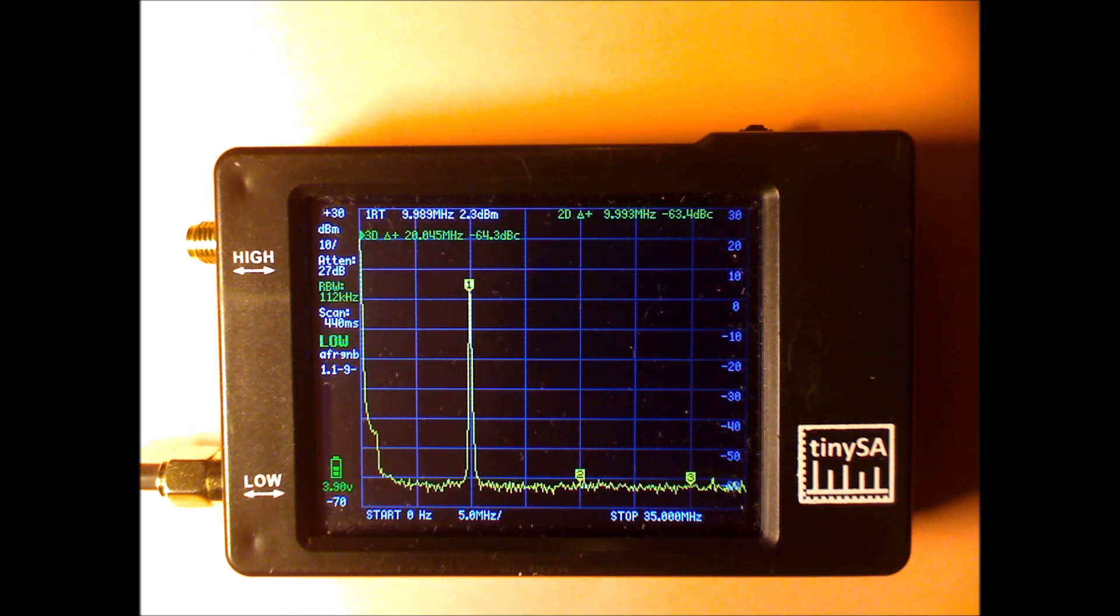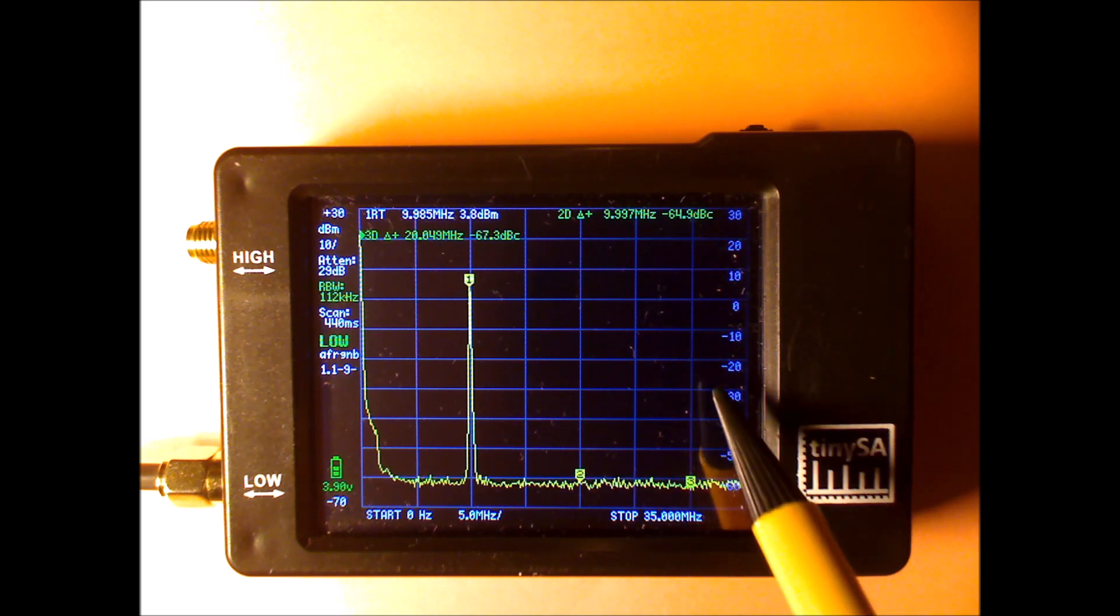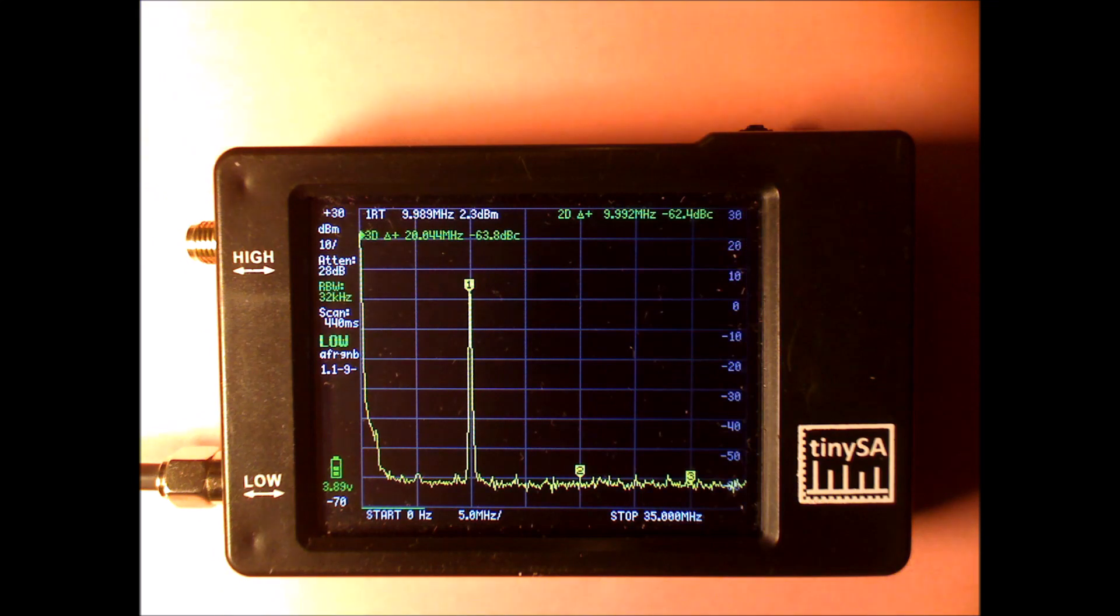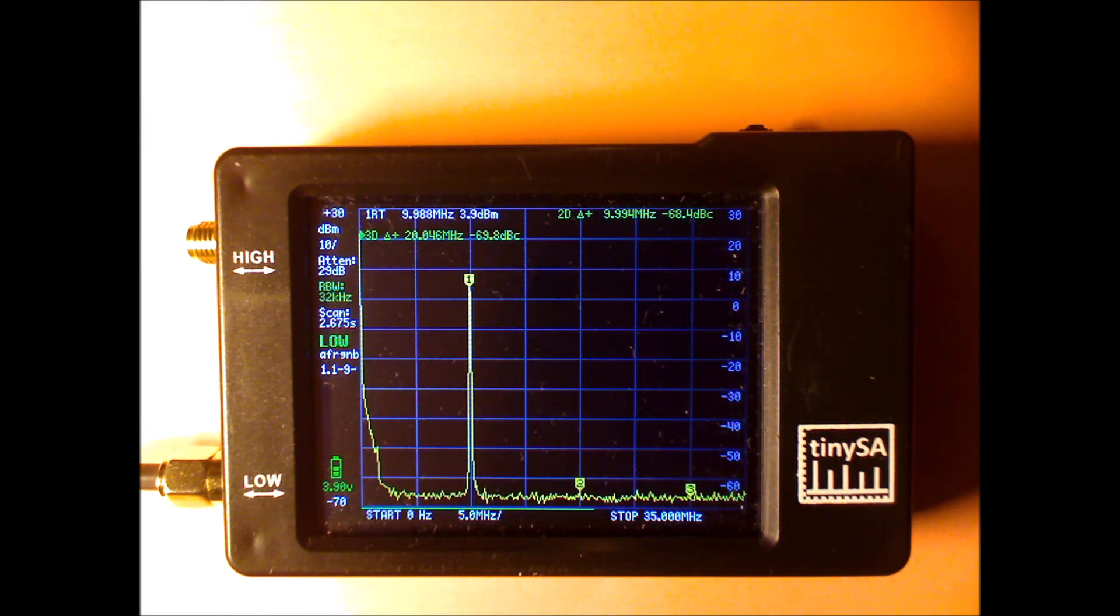And you see now that the noise floor dropped to minus 65 dB. And I still can't see any harmonics, so I'm going to reduce it further, 30 kHz. Still no sign of harmonics, we're at minus 68 dBc, the noise floor.